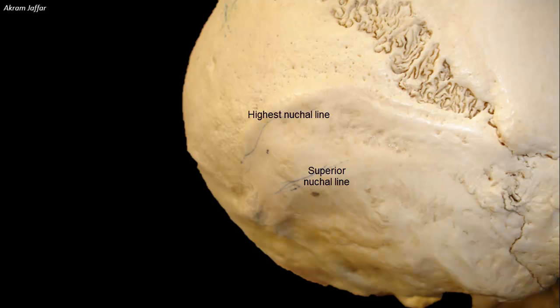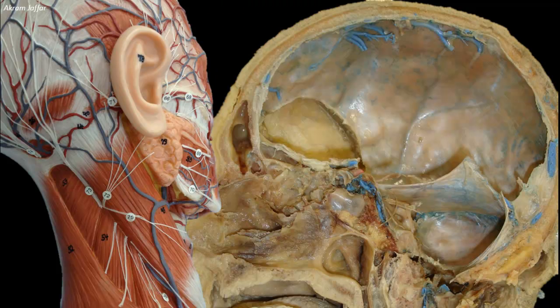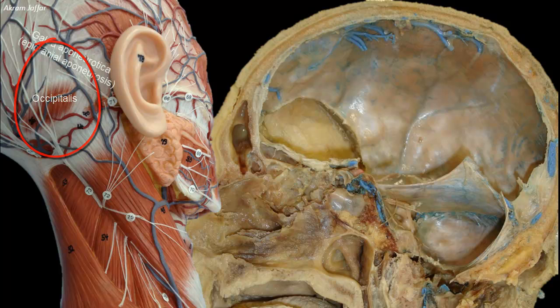Above the superior nuchal line is the highest nuchal line. This line is a faint line, and often imperceptible in most skulls, but it is very prominent in this skull as a variation. The highest nuchal line provides attachment for occipitalis and galea aponeurotica of the occipitofrontalis muscle.